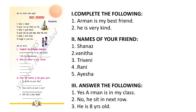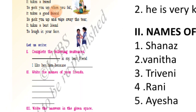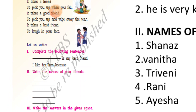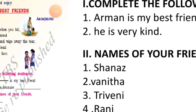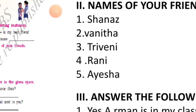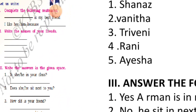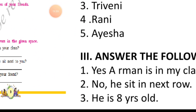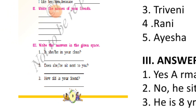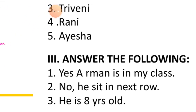Page number nine, 'Best Friends.' Roman numeral one: complete the following sentences. They have given 'dash is my best friend.' For me, Arman is my best friend. I like him because he is very kind. Write the names of five friends: Shanas, Vanita, Truveni, Rani, and Aisha. Answer the questions: is Arman in your class? Yes. Does he sit next to you? No, he sits in the next row. How old is your friend? My friend is eight years old.